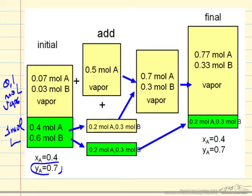If I evaporate 0.2 moles of A, then I have to evaporate 0.3 moles of B because this still has an overall mole fraction of 0.4. The liquid mole fraction doesn't change. That's my final liquid phase with the same mole fraction.